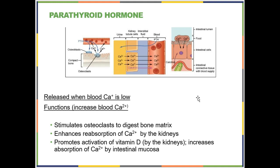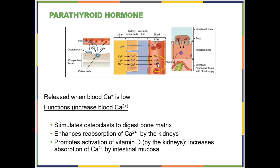There are four little parathyroid glands on the back of your thyroid that secrete parathyroid hormone. Parathyroid hormone is the antagonistic partner to calcitonin. If blood calcium levels are low, parathyroid hormone is released to increase them: it stimulates osteoclasts to chew up bone and release calcium into the bloodstream, stimulates the kidneys to retain as much calcium as possible by pulling it out of the urine, and increases calcium reabsorption in the digestive tract.